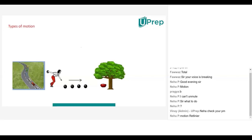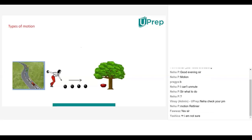Generally three types of motion will be there: translatory motion, rotatory motion, and oscillatory motion. We are going to learn about them today. The first type is translatory motion. The motion in which all the particles of the body move through the same distance in the same time is called translatory motion.